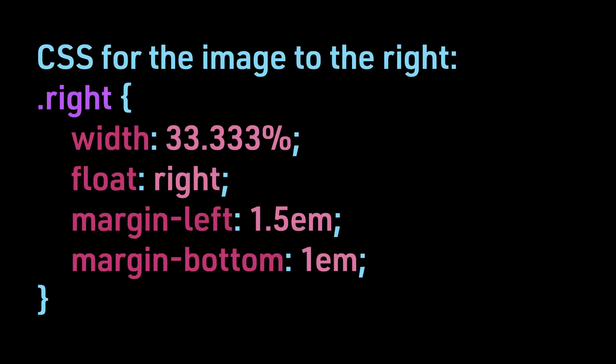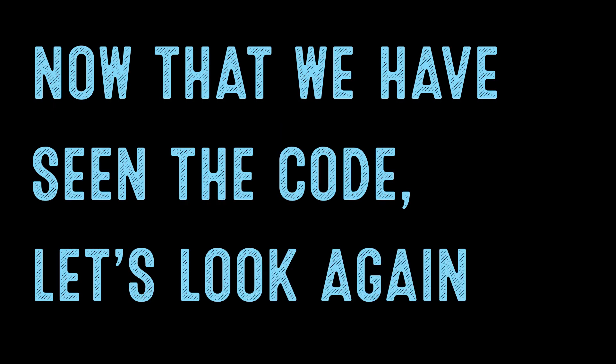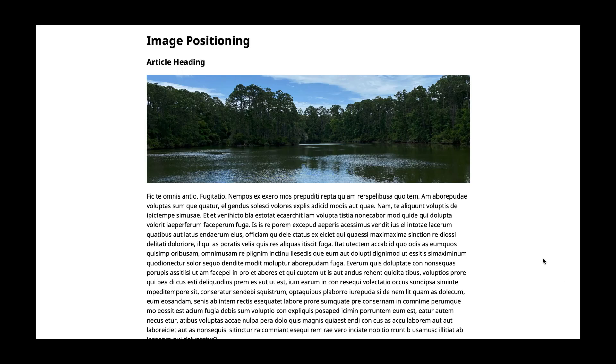Here is the CSS for the image to the right. We target .right. Again, the image will only span about one-third of the full width of the containing element. We float this image as well, but to the right instead. We also add margin to the relevant sides, so there is a little space between the image and the text. Now that we have seen the code, let's look again at how this would display on our page.